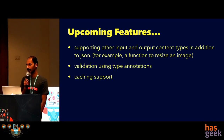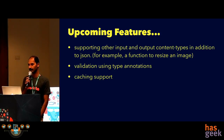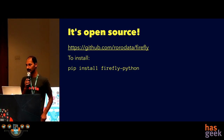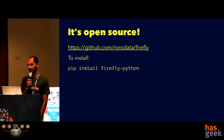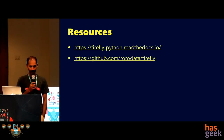There are other features we're working on: supporting other input formats like image uploads, validating inputs based on Python 3 type annotations, and adding caching support so that calling the function with the same input won't recompute but return cached results. It's open source — go to github.com/rodata/firefly to get the code. To install, just run pip install firefly-python. Feel free to catch me around if you have any questions.